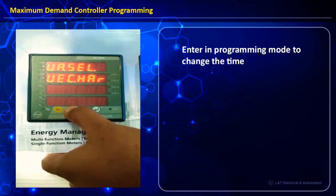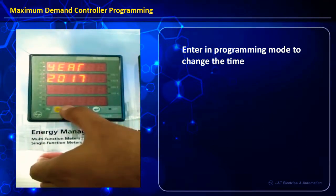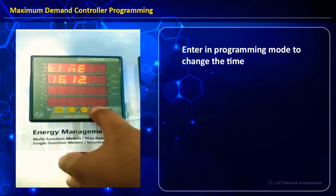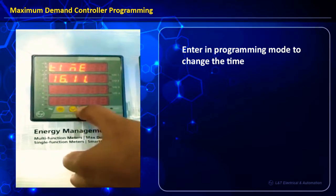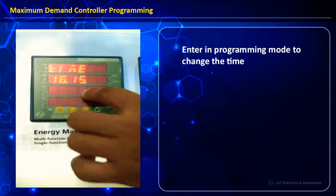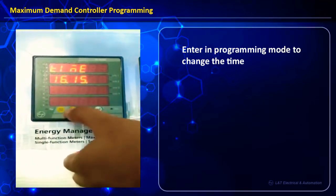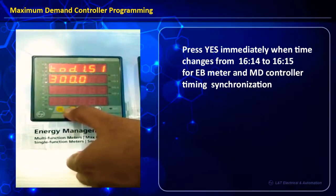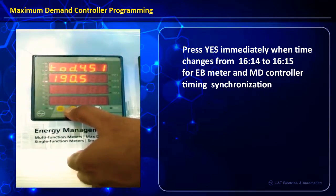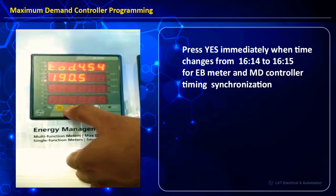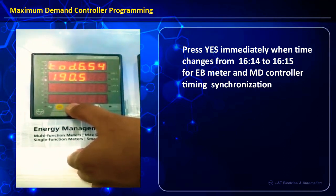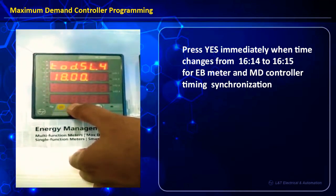We go directly to the timing area which we need to update for synchronization. Right now, say the time reads 4:12; we change it to 4:15 and confirm this value. We then go towards the end of the programming window where it asks for yes or no confirmation. We wait until the EB meter changes from 4:14 to 4:15, and at that exact moment we press the yes button to confirm, ensuring synchronization of timings between both meters.